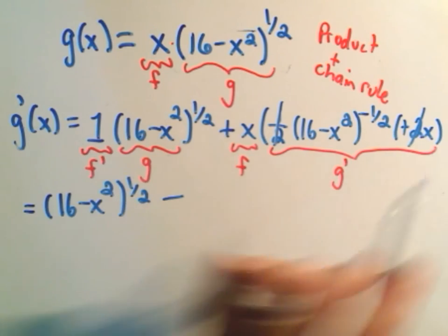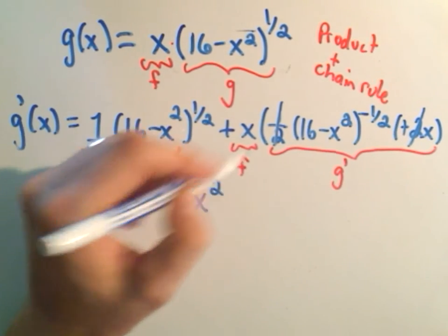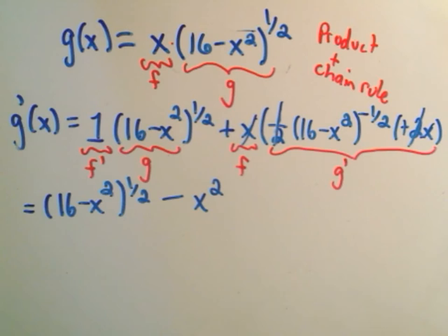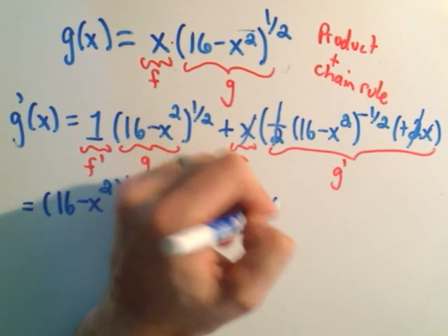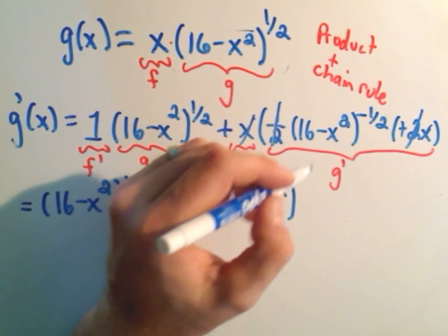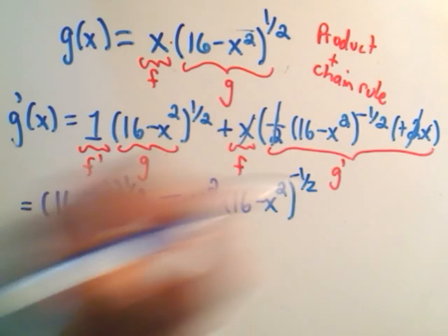I've got an x and an x, that'll give me x squared, so that'll take care of my x's. And then the only thing I'm left with is the 16 minus x squared to the negative one-half power.